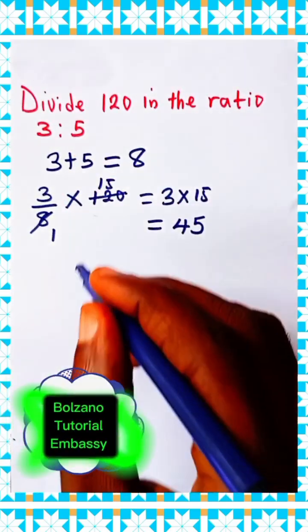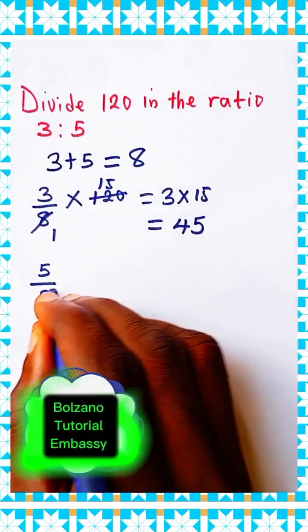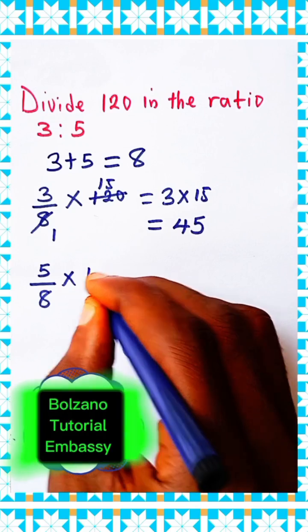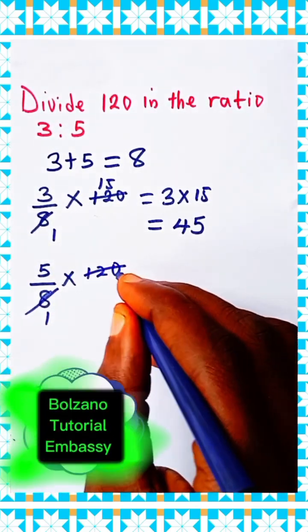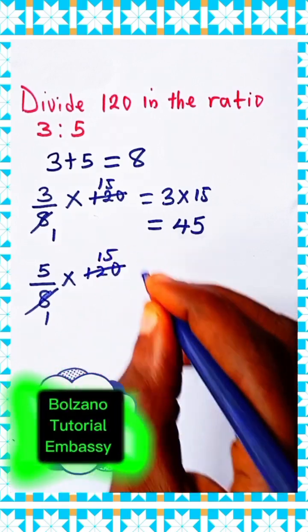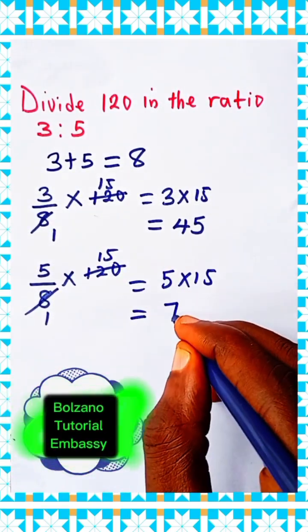Then the second value, which is 5. 5 over the ratio sum times the value we are dividing, which is 120. 8 divided by 8 is 1. 120 divided by 8 is 15, leaving us with 5 times 15, and 5 times 15 is equal to...